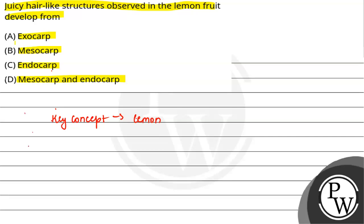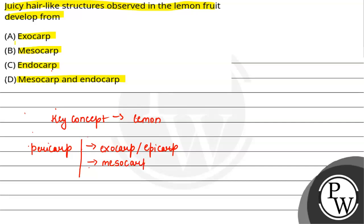So when the ovary ripens, यह pericarp बनाती है. और यह जो pericarp होता है, यह आगे जाके further तीन layers में differentiate करता है. One is exocarp and epicarp, which is the outermost layer. The middlemost layer is the mesocarp and the innermost layer is the endocarp.